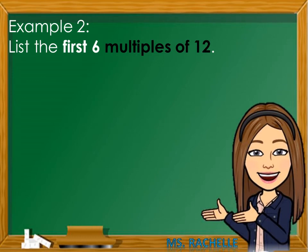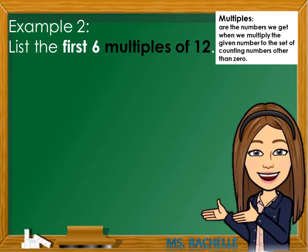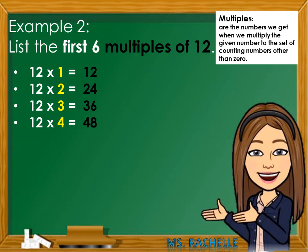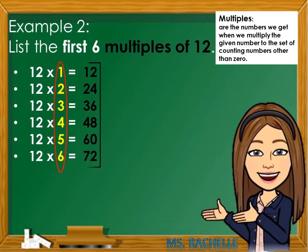Example number 2: List the first 6 multiples of 12. Multiples are the numbers we get when we multiply the given number to the set of counting numbers other than 0. So: 12×1=12, 12×2=24, 12×3=36, 12×4=48, 12×5=60, and 12×6=72. Therefore, 12, 24, 36, 48, 60, 72 are the first 6 multiples of 12.